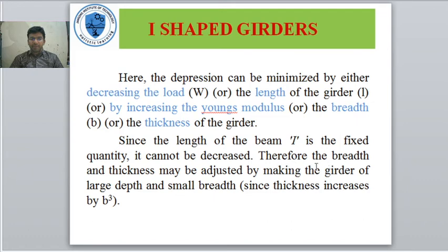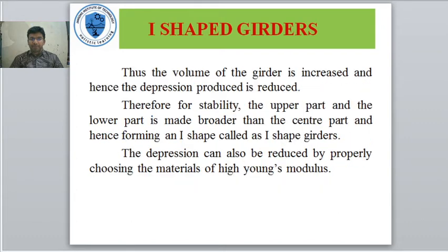Since the length of the beam is a fixed quantity, it cannot be decreased. Therefore, the breadth and thickness may be adjusted by making the girders of larger depth and smaller breadth. Since thickness increases cubically, the volume of the girders is increased and the depression produced is reduced. For stability, the upper and lower parts are made broader than the center part, forming the I-shaped girder.